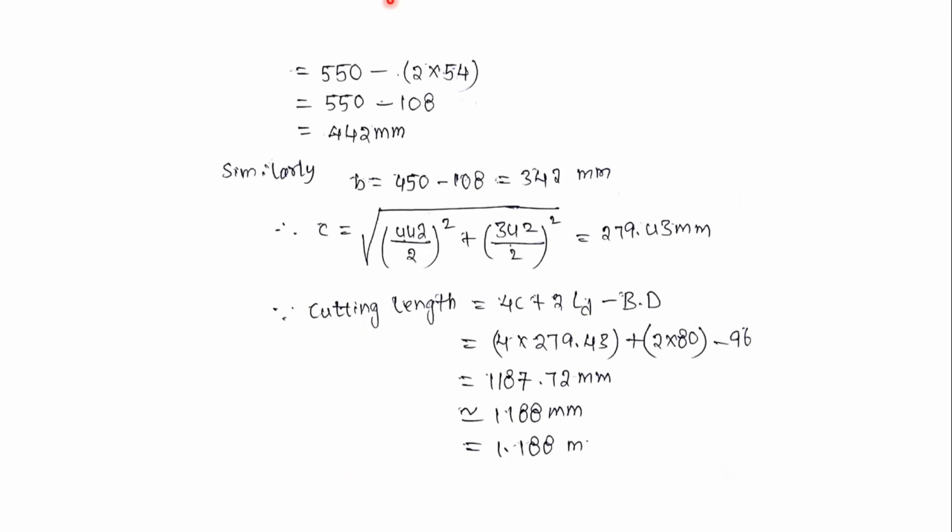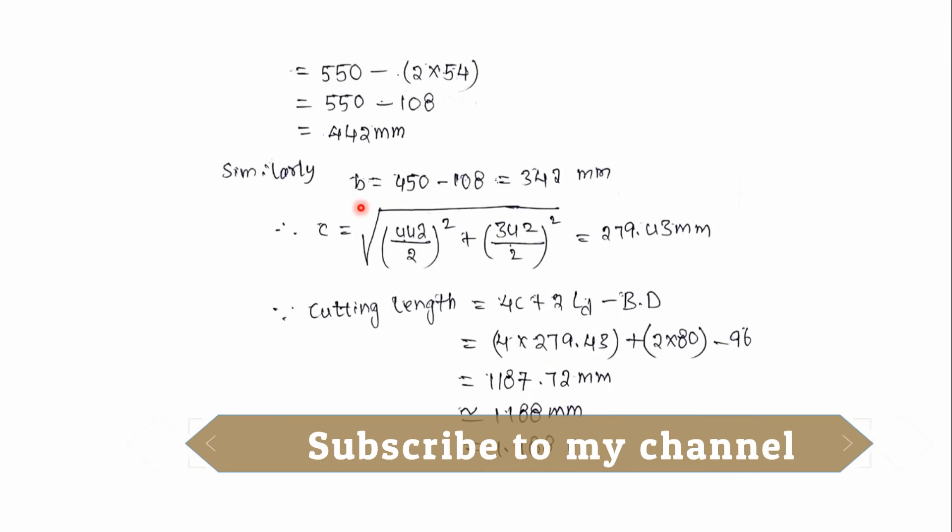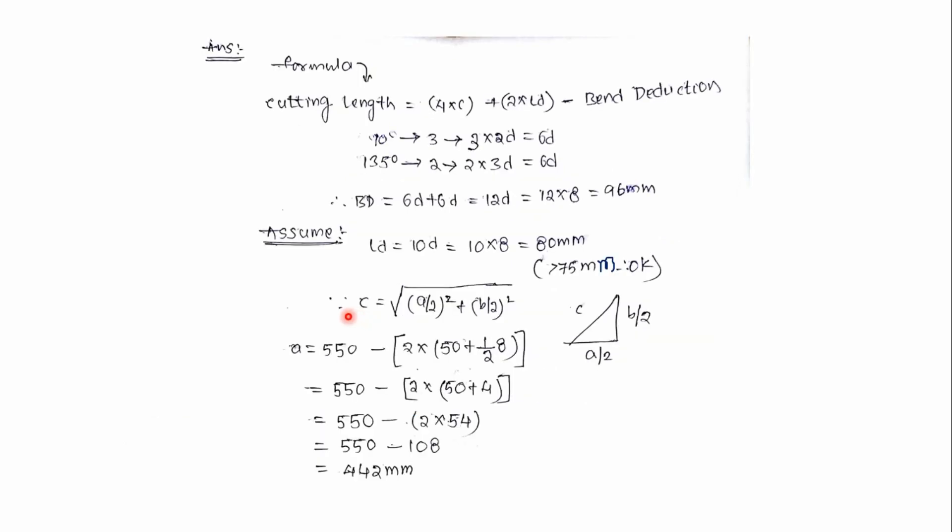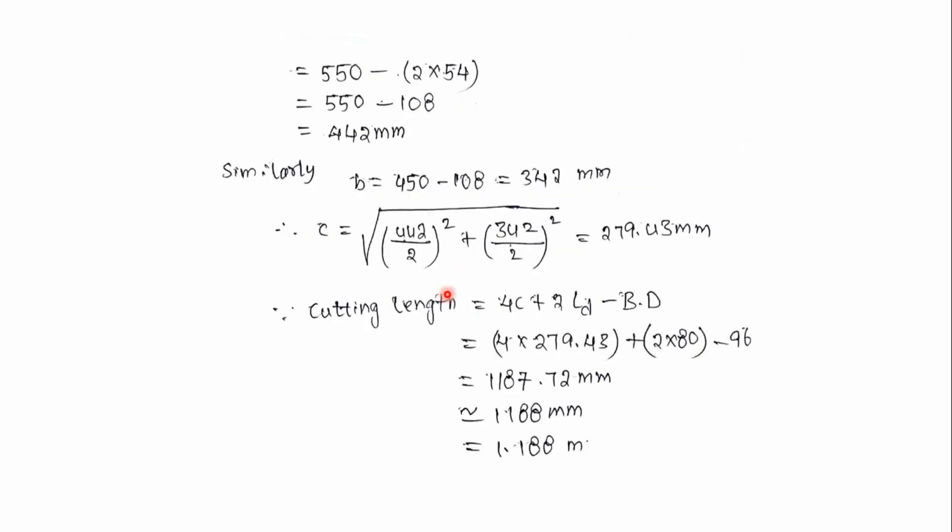To get the value of c, that is square root of (442/2)² plus (342/2)².